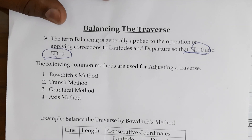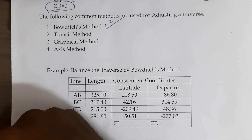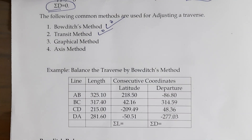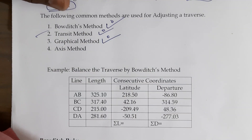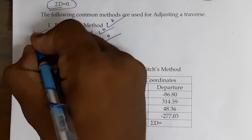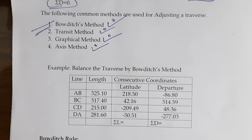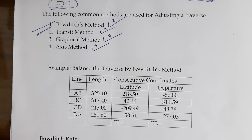There are four methods used for the adjustment of traverse, or balancing the traverse. The first method is the Bowditch method, generally used for linear and angular measurement when we measure precisely. The second is the Transit method, used when there is an error in angular measurement. Then there are the Graphical method and the Axis method. Today we cover the first two methods: the Bowditch method and the Transit method.